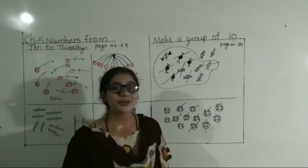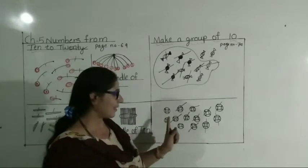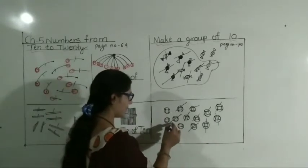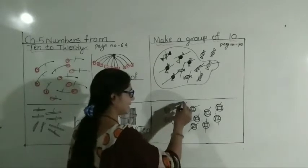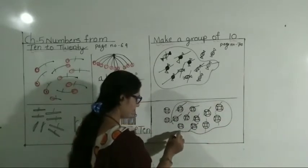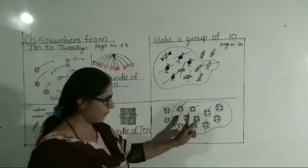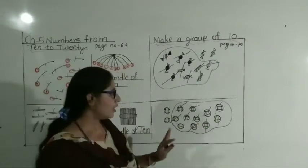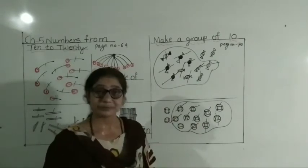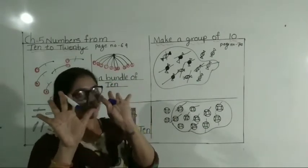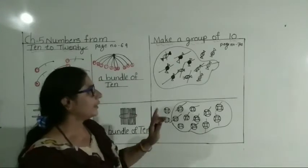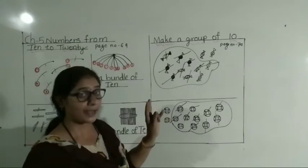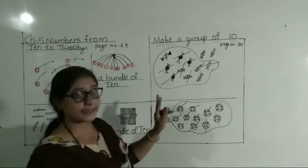Now what you have to do, student? Circle — make a circle like this. Now group ho gayi. One group mein kitne hota hai, student? How many objects are there? Ten objects. Understood, student. How to do? Samaj mein aava la hai — ten ten kaise karna hai?